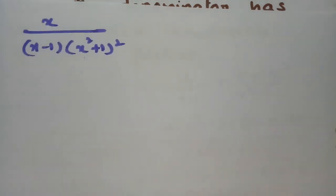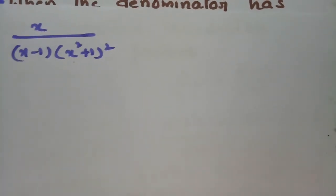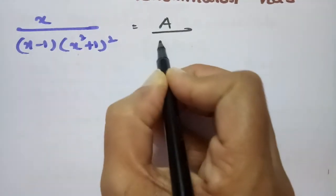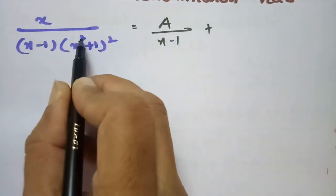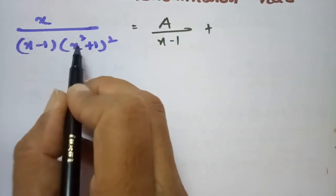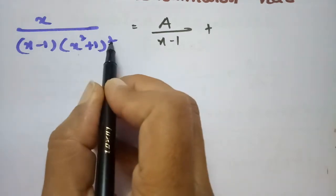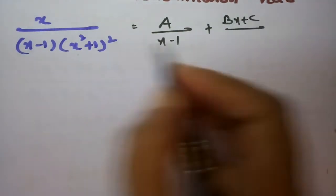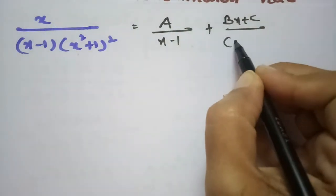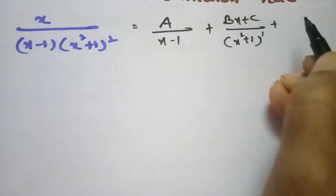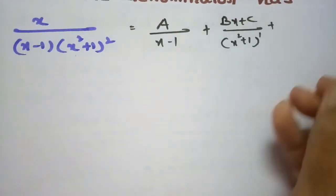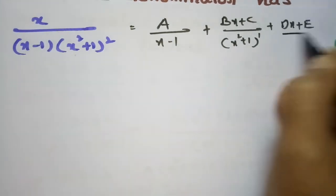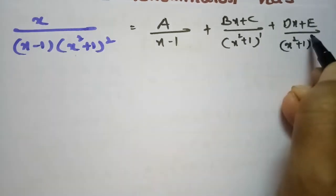Now for the second example of the same model. We split x / [(x − 1)(x² + 1)²] into: A/(x − 1), plus (Bx + C)/(x² + 1) for the inside (one power), plus (Dx + E)/(x² + 1)² for the outside repeated factor. I've used A, B, C for the first terms and D, E for the next.